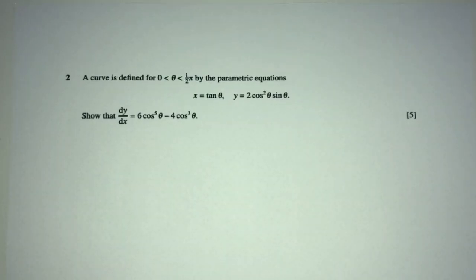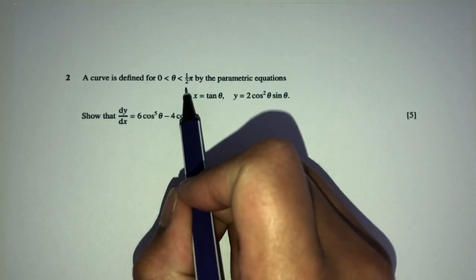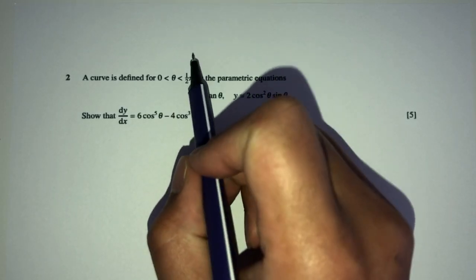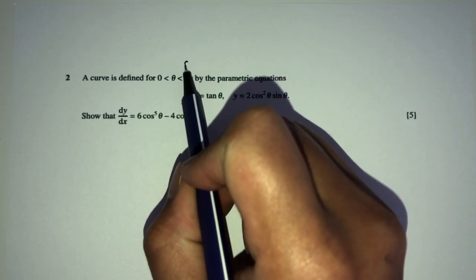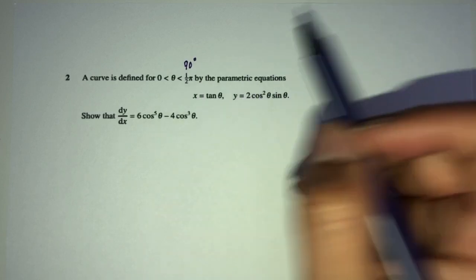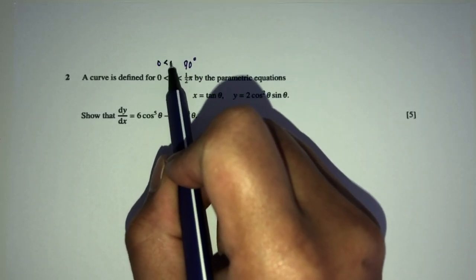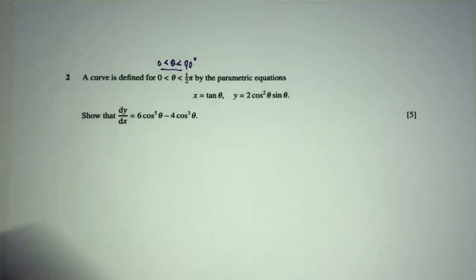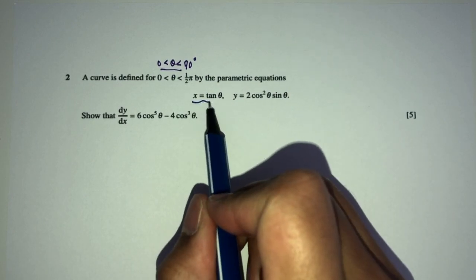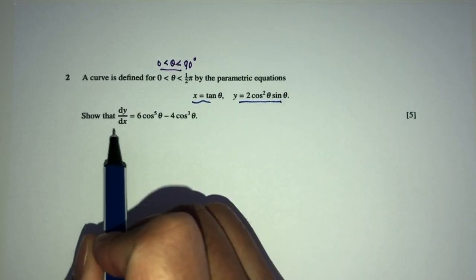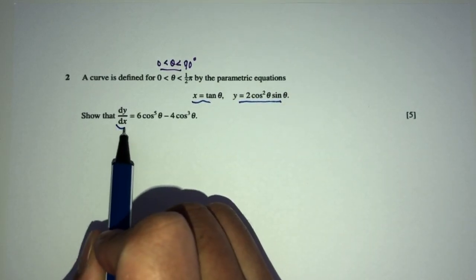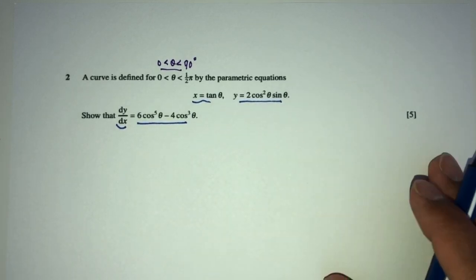Now, let's move on to question number 2. A curve is defined for the value of theta between 0 and pi by 2 — so pi by 2 is 90 degrees — basically, theta will be between those two values in this question. x is defined by this, y is defined by this. We have to find dy by dx equal to this.